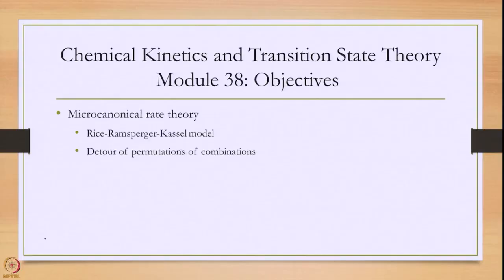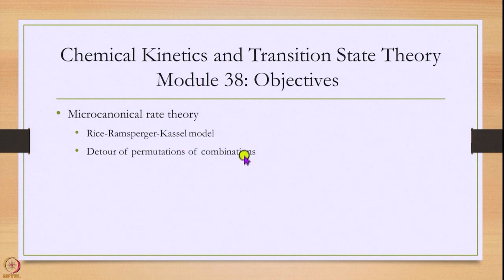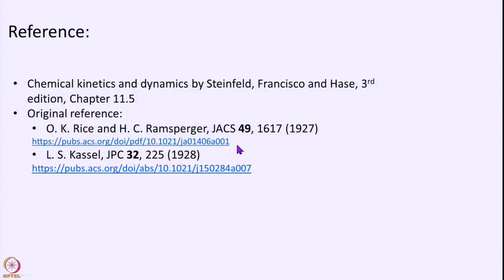We will start today with a rather simple treatment done by three gentlemen — Rice, Ramsburger, and Kassel — in the 1920s. Today we will interestingly take a little detour of permutations and combinations. What I am teaching today you can find in the book by Steinfeld, Francisco, and Hayes in chapter 11.5. I have also provided the original papers from the 1920s by Rice and Ramsburger, and the other by Kassel.